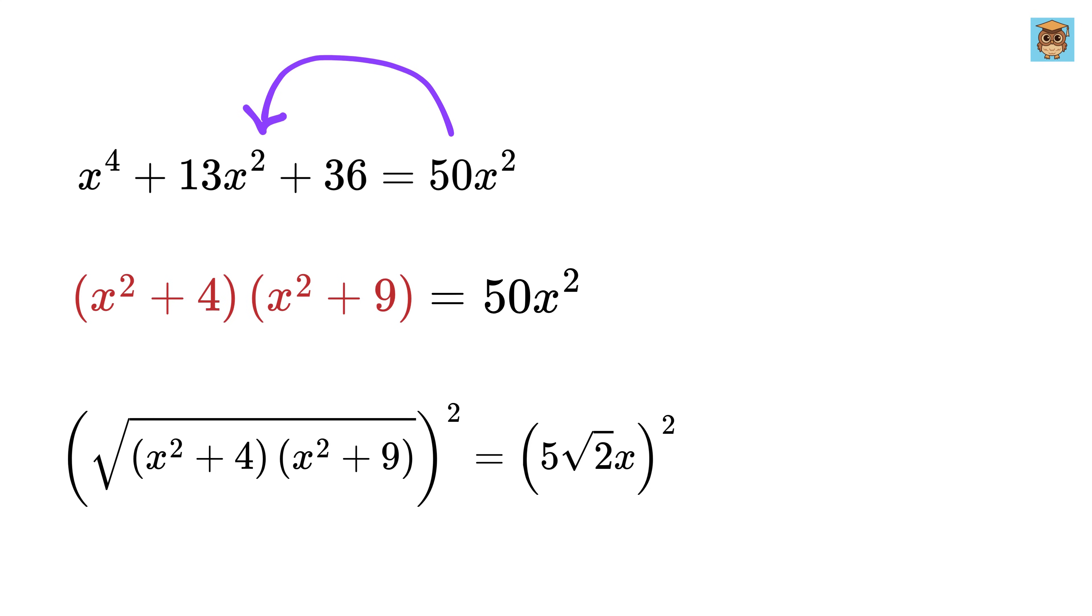Now take 50 x squared to this side. This will become x to the 4th minus 37 x squared plus 36 equals 0.